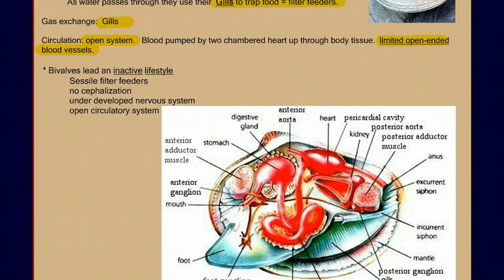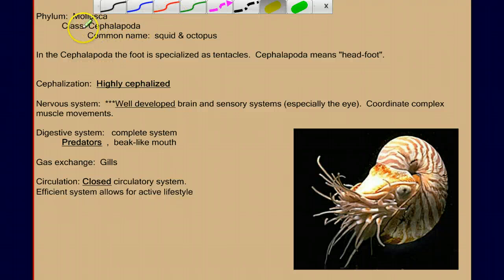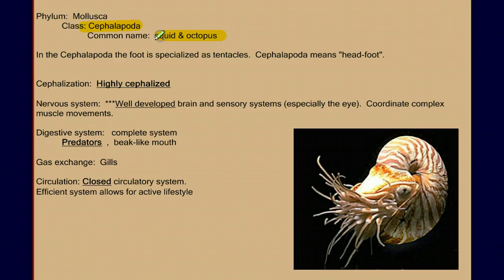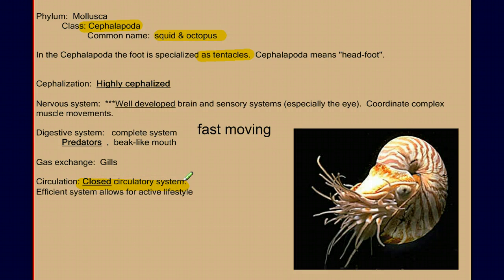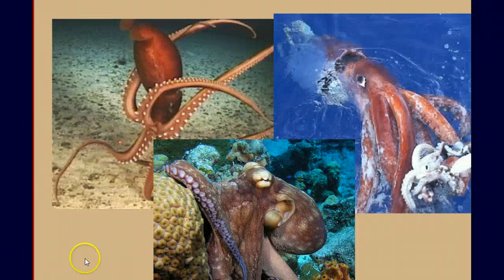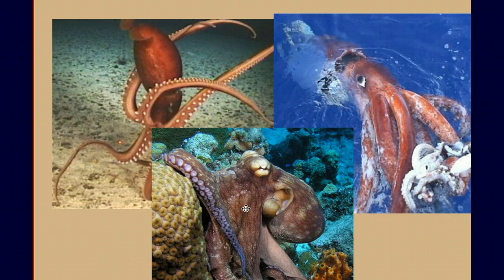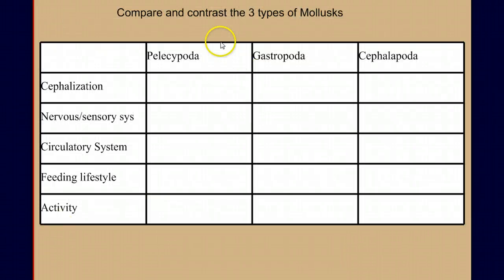In stark contrast to the noncephalized pelecypods, we have the cephalopoda, which in their name we can see are cephalized — the squid and octopus. Their muscular foot has been specialized for grasping tentacles, as these are predatory, fast-moving hunters. With their well-developed nervous systems and sensory systems, they can find and hunt food. We can predict what type of circulatory system they have — they have an efficient closed circulatory system, which allows them to be fast-moving and large predators. The octopus could never get away with the type of circulatory system or the underdeveloped sensory systems that we see in the pelecypods, nor the systems that gastropods have.